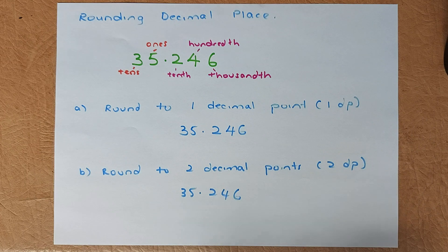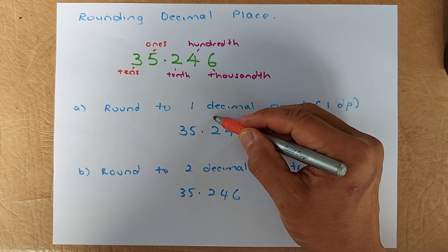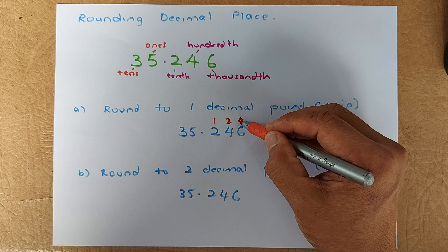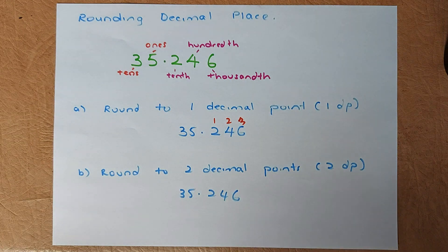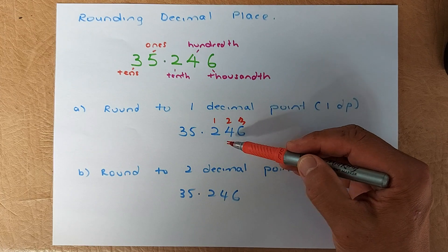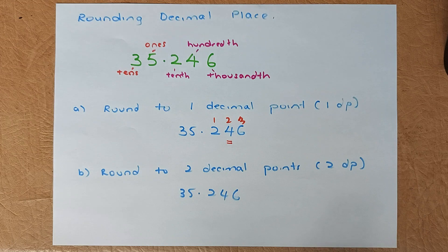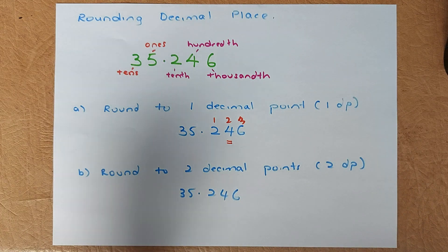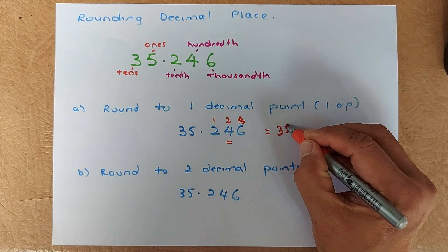In the number 35.246, the decimal point is here. The first digit after the decimal point is two, followed by four and six — so there are three numbers after the decimal point. If the question asks you to round to one decimal place, you look at the next number, which is the second number. If one DP, you look at the second number. The second number here is four. Since four is less than five, the two remains the same. So your answer is 35.2.